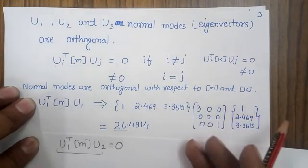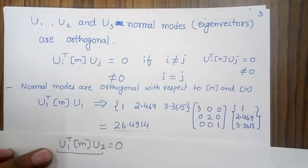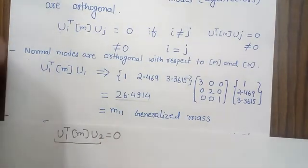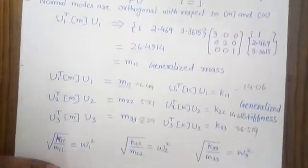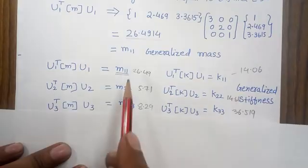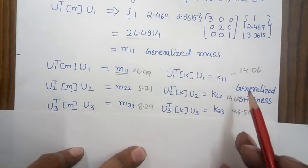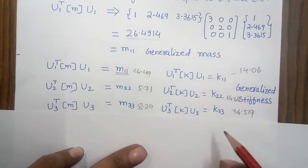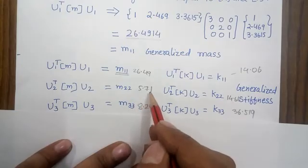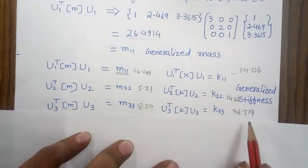When using the same normal mode, I get the value 26.49, which I define as the generalized mass, denoted m11. The three generalized masses are m11, m22, and m33. Similarly, three generalized stiffnesses can be calculated using the three normal modes. In this case, the generalized masses are 26.49, 5.71, and 8.29, and the generalized stiffnesses are 14.06, 14.66, and 36.519.